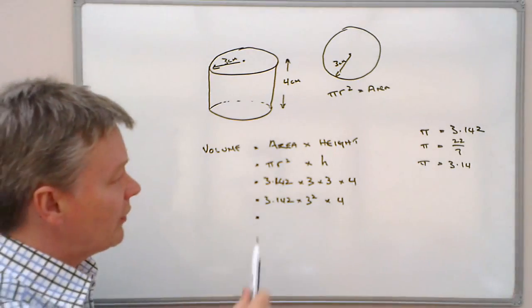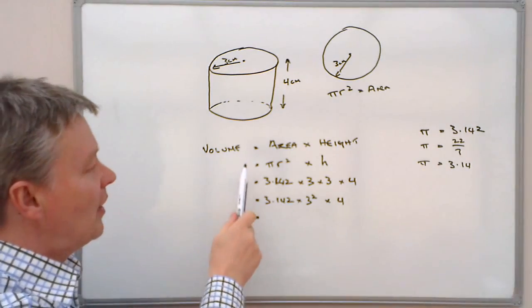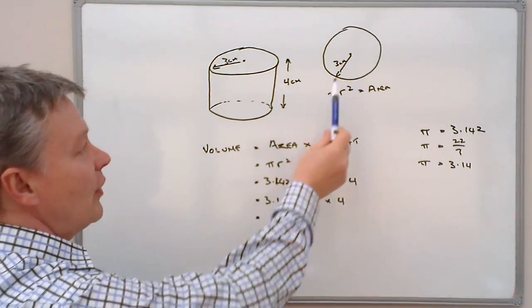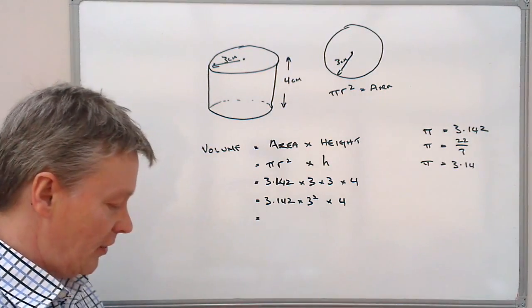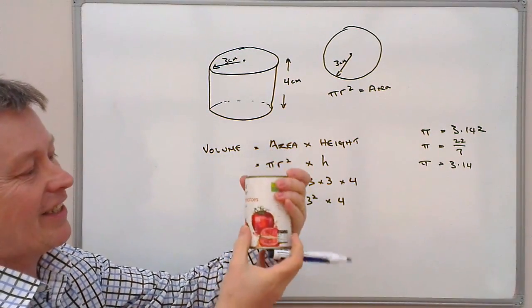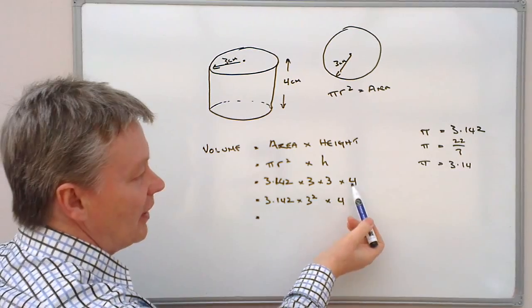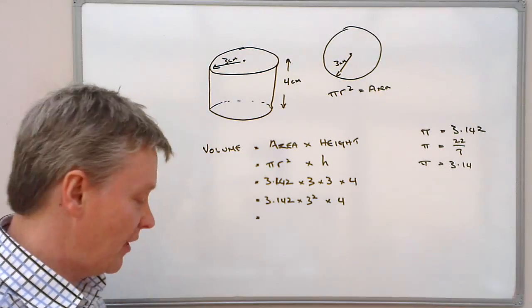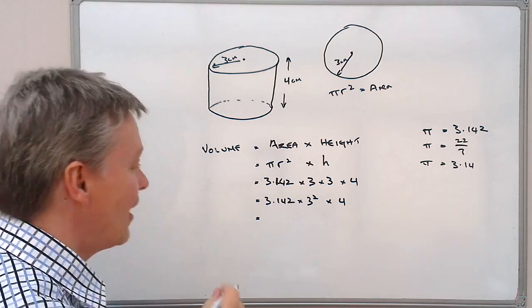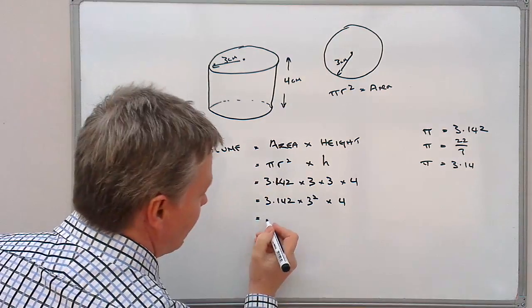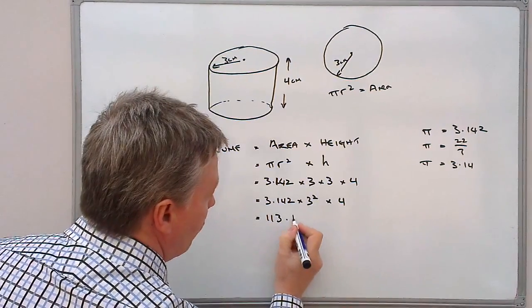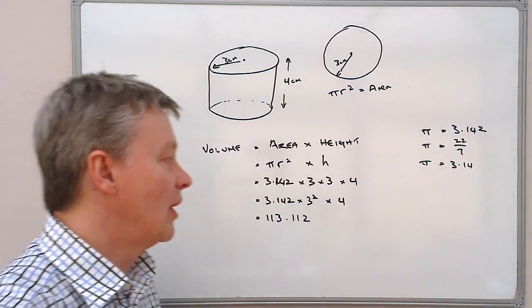So what we've achieved here is the calculation for working out the volume of the cylinder. So we've got the area of the circle at the top and there it is, and we're going to multiply it by the height. And in this particular case it's 4 centimetres. So if we put that into a calculator, if we put that into a calculator it comes out as 113.112.